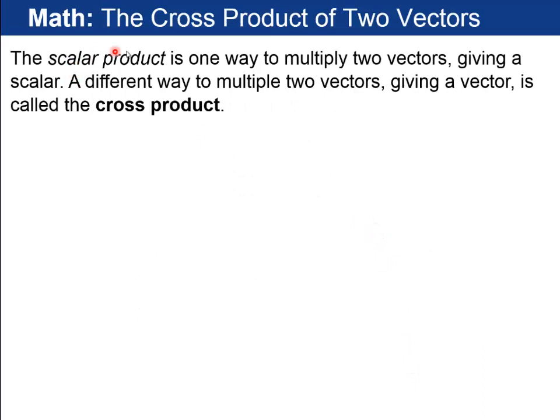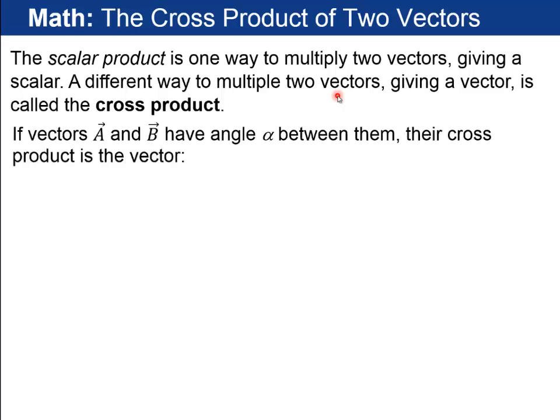So now I want to do a little bit of math review here. We already did earlier in the semester a scalar product of multiplying two vectors. This came up first in the chapter on work, where we were doing the force dot the displacement. Well, now there's a different way to multiply two vectors, which ends up with a vector, and that's called cross product.